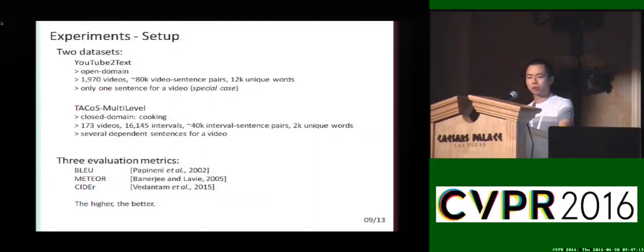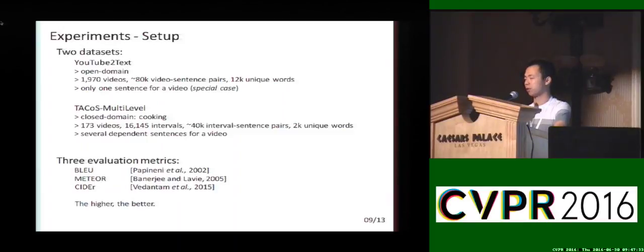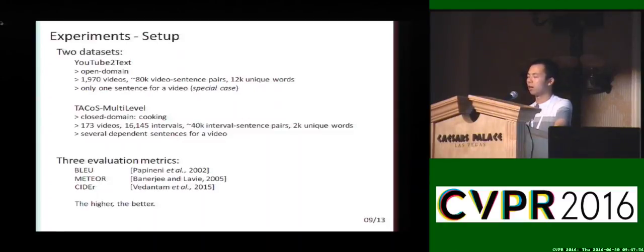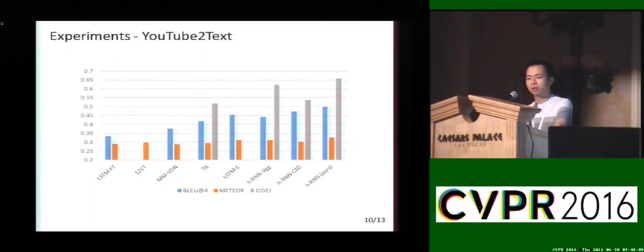For the experiments, we have two datasets. The first is YouTube-to-text, which is open domain, containing a variety of scenarios downloaded from YouTube. We use this only as a special case since only one sentence is annotated per video. The second dataset is more relevant — it's a closed-domain cooking dataset where we can generate several dependent sentences per video. For evaluation we use three metrics: BLEU score, METEOR score, and CIDEr score. Our method outperforms all comparison methods on both baselines.